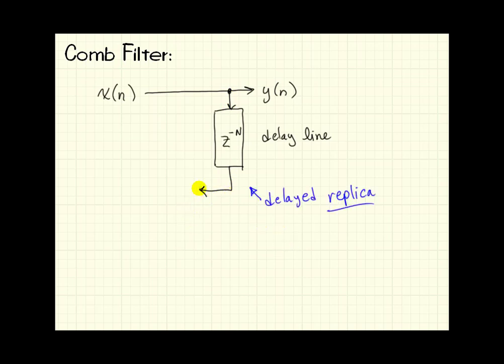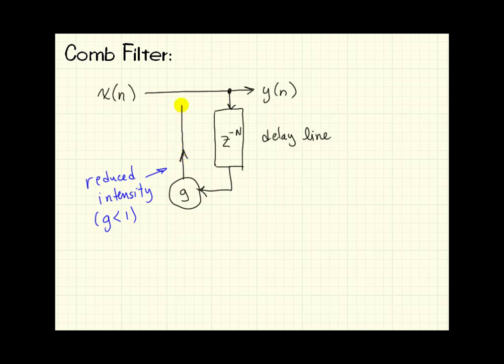But then we need to reduce its intensity, so we'll pass that through a multiplying device where we multiply by the gain G. So that gives us our reduced intensity. Now I would like to keep recirculating that back through the delay line, so we can use a summing junction at the top.